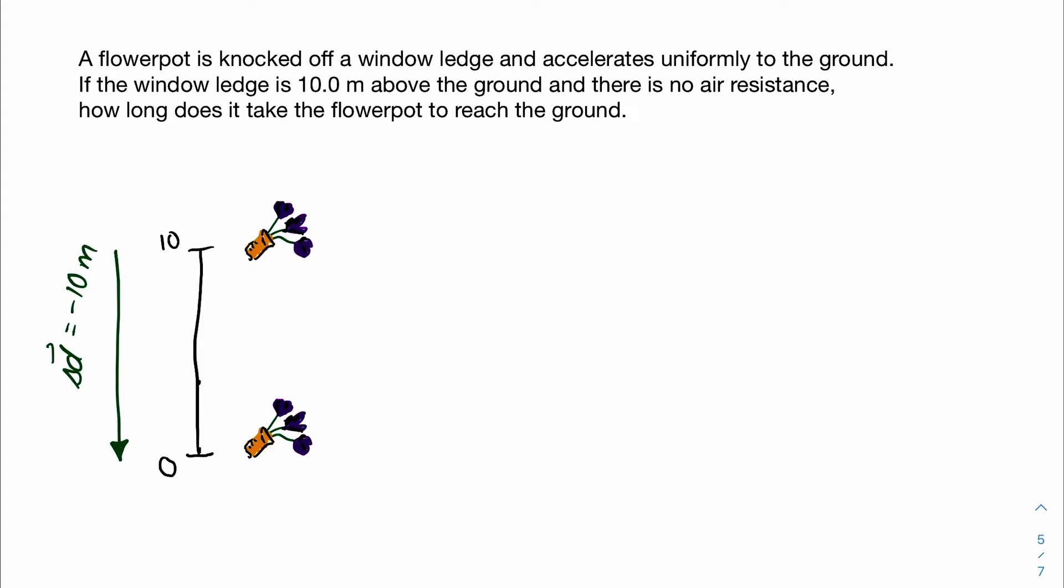Once we got displacement vectors, then we can draw our velocity vectors. Because it just got knocked off a window, we may assume that the initial velocity is going to be zero. When it hits the ground, we instead assume that moment just before it hits the ground. This means that we don't actually know how fast it was moving just before it hits the ground, so it's going to be unknown. We don't actually know the length of the vector.